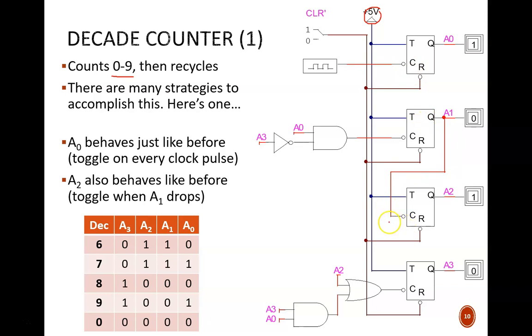As before, the least significant bit, which I'm here calling A0, toggles on every clock cycle. We accomplish this by feeding the system clock directly into it. But past this point, the remaining flip-flops don't necessarily toggle when the prior flip-flop drops low. How should we determine when the other flip-flops are allowed to toggle? By looking at the required count sequence.